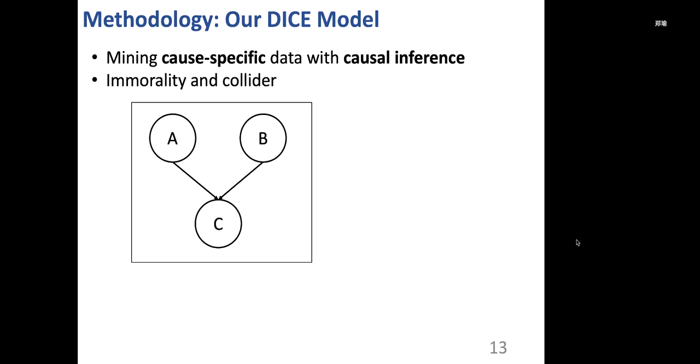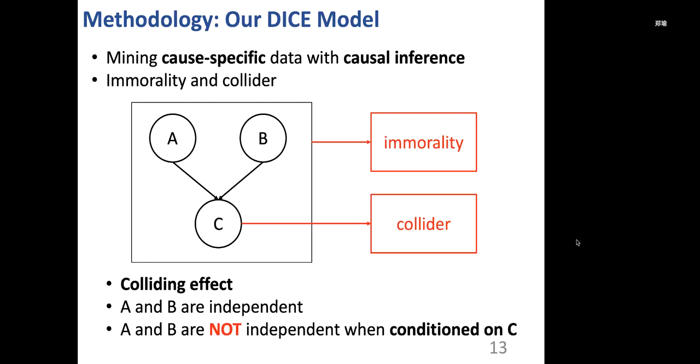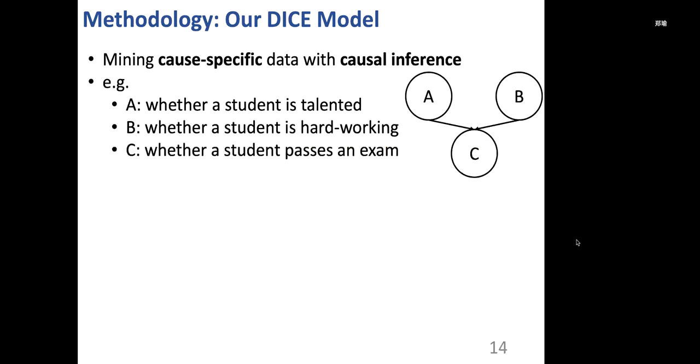In order to obtain cause-specific data, we propose to utilize tools from causal inference. Here I will briefly introduce some basic information. The three nodes here, A, B, and C, form a structure called immorality, and C is the collider of A and B. The colliding effect tells us that A and B are independent. However, after we condition on C, A and B are not independent anymore. Here is an example from daily life. Suppose C is whether a student passes an exam, and A is whether a student is talented, B is whether a student is hardworking. And the talent and hardworking are generally independent. However, if we condition on the student's performance on the exam, the two factors are not independent. For example, we know Bob passes the exam and Bob is not talented. Then he is hardworking with high probability. Similarly, Alice doesn't pass the exam and Alice is talented. Then we know she is most likely not hardworking.